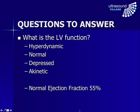To do this, you need to know what the normal ejection fraction is. In a normal, healthy heart, it's 55% — that is, 55% of the end diastolic volume is ejected with each beat.